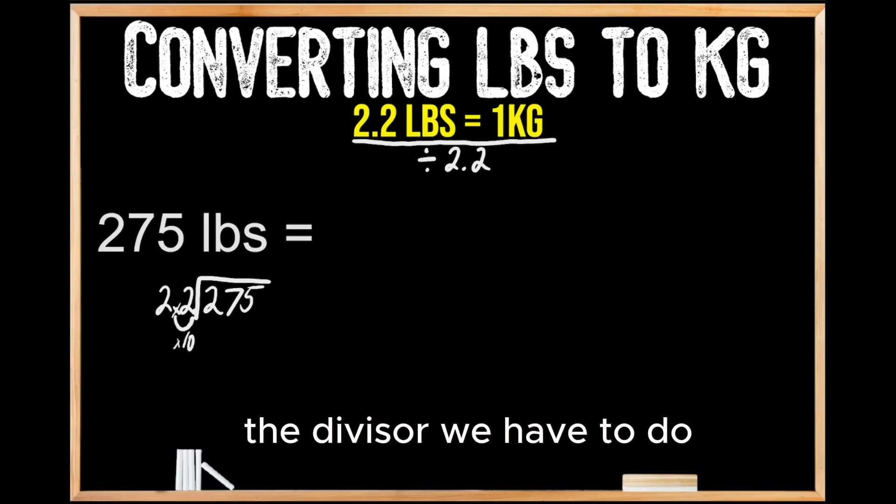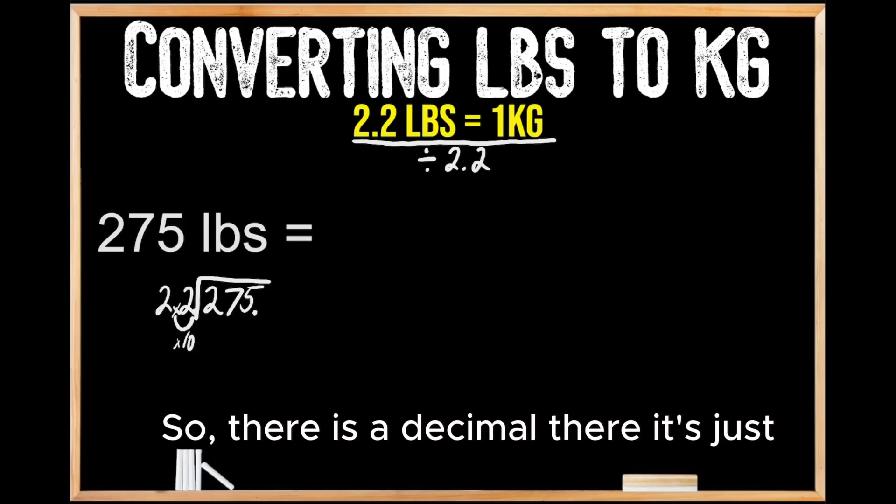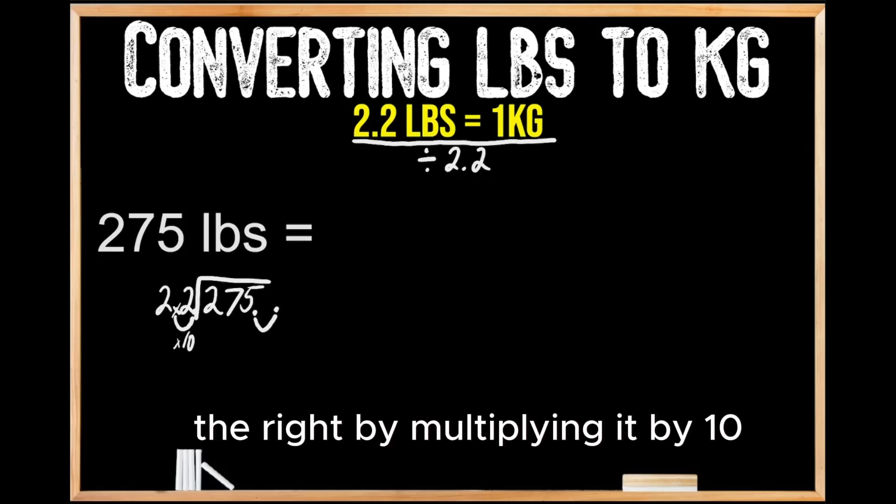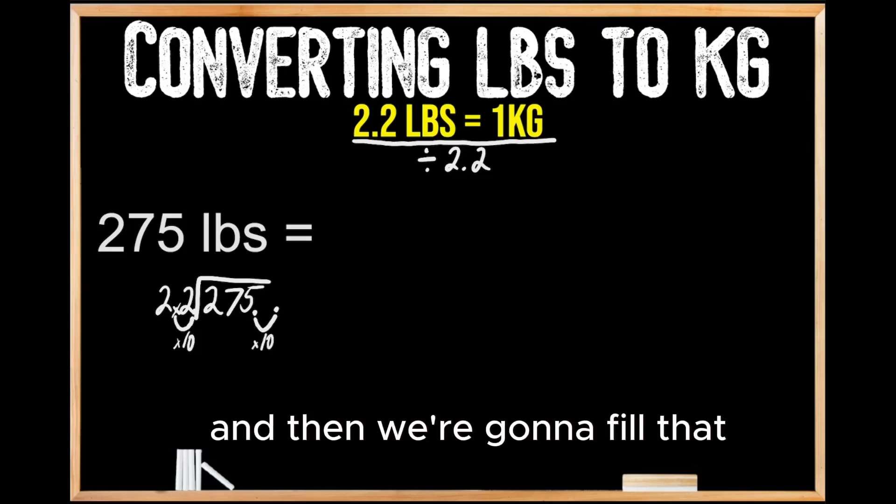So since we did that to the divisor, we have to do the same thing to our dividend as well. So there is a decimal there, it's just not written, and we're going to move that decimal one digit to the right by multiplying it by 10.